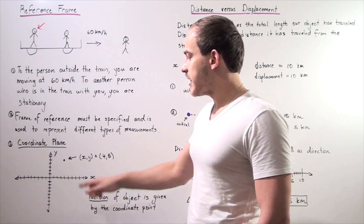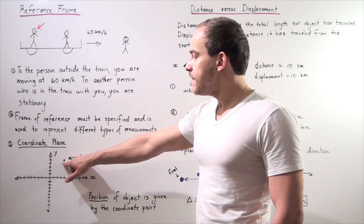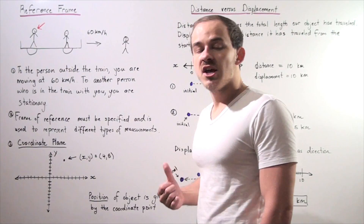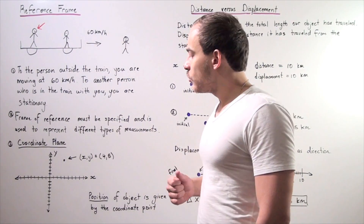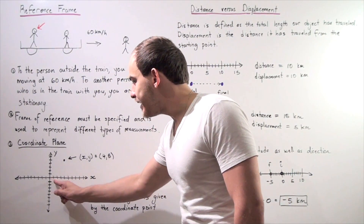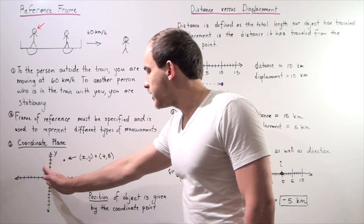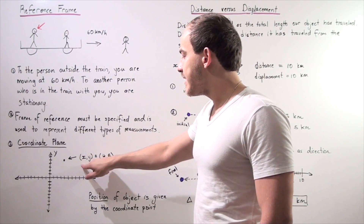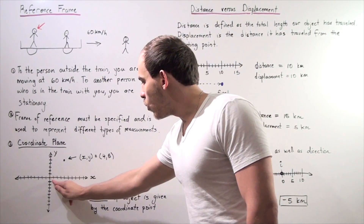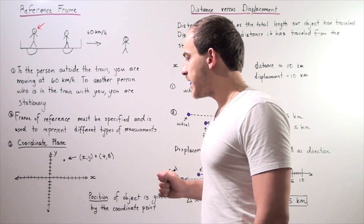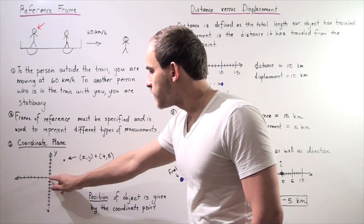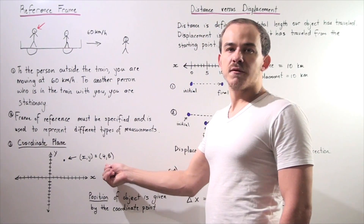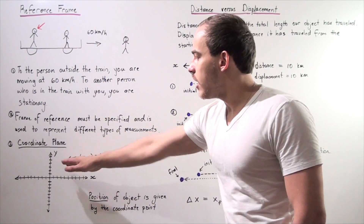Anything going below the point of origin along the Y axis is negative. Let's suppose you're at the point zero, zero — the origin. And let's say your friend is at another point. How do we specify where that person is? We use the XY coordinate — we count how many units over along the X axis and then along the Y axis, and specify X comma Y. So four units over along the X axis is positive four, and five units up is positive five. So four comma five is the location of our object.